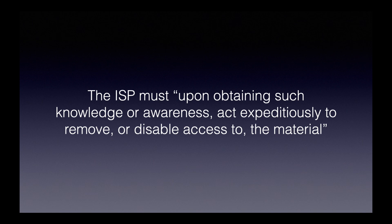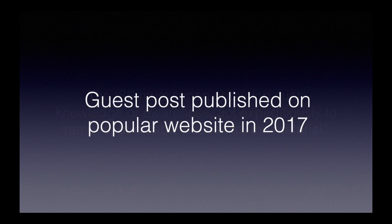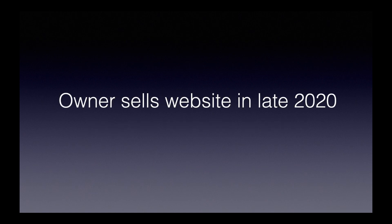I mentioned earlier that I wrote a guest post in 2017 that appeared on a popular website in the blogging niche. In late 2020, the owner sold that website to someone else. I became aware of this because I noticed that my backlink from that website had dropped out. My name still appeared as the author of the article, but the new owner — whom I will call Person A — had removed the link to my website. When you clicked on my name, it redirected to a web page advertising Person A's online blogging course. I had done a lot of original research for that article, which was a guide on how to write introductions to blog posts, so naturally I was not happy that someone else was now using the article entirely for their own purposes.